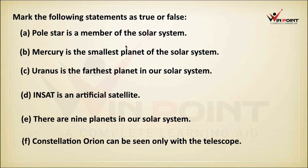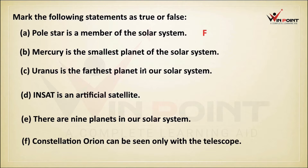Polestar is a member of the solar system — False, because there is only one star in our solar system and that is the sun. Mercury is the smallest planet of the solar system — True.